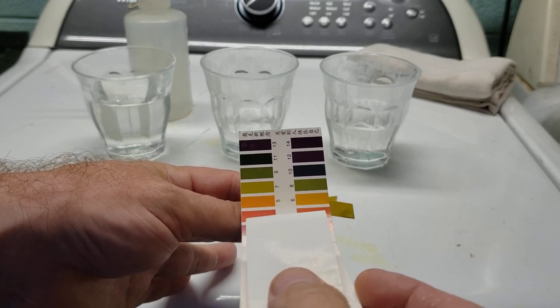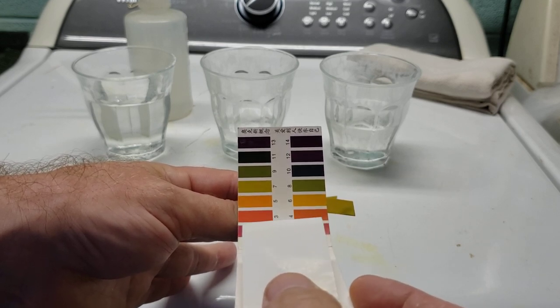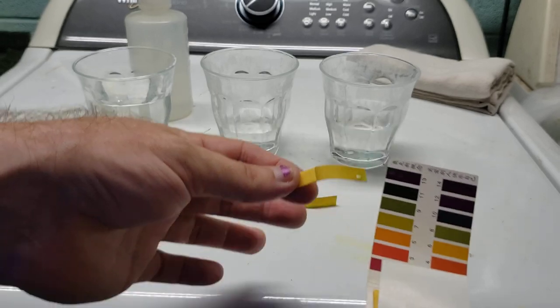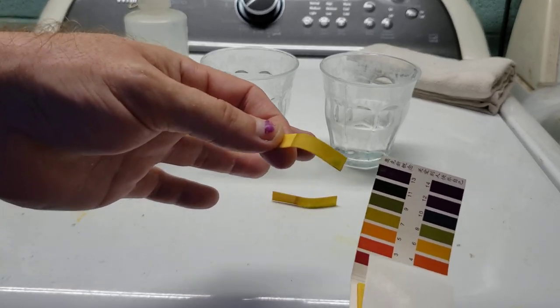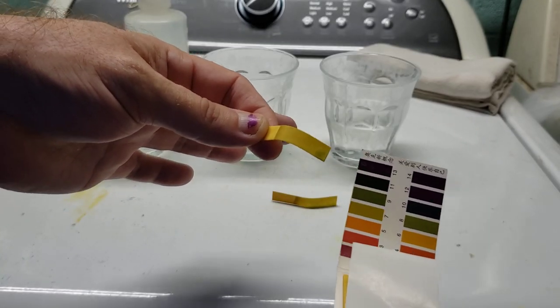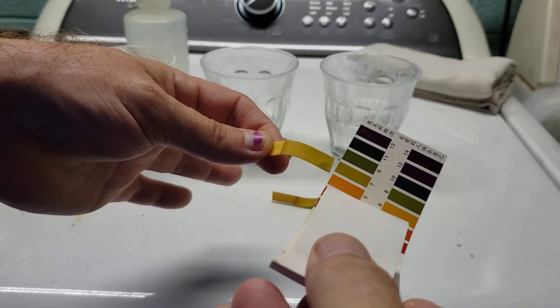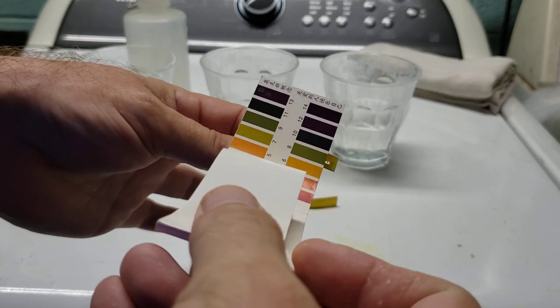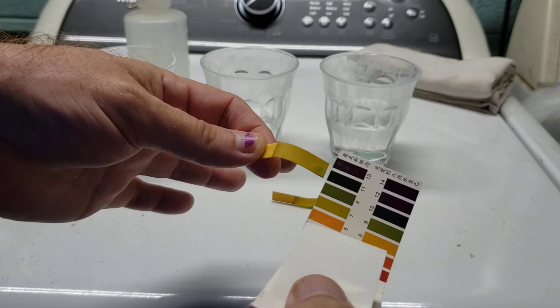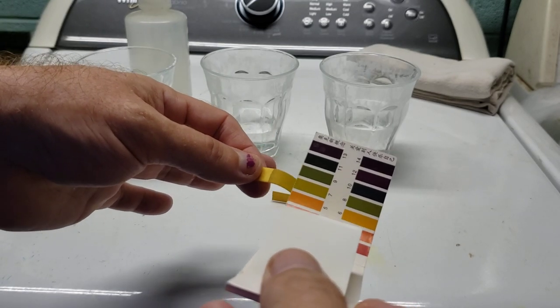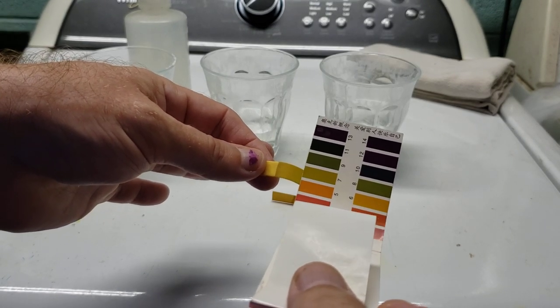I've never taken a chemistry class or science classes where I learned how to read these papers properly. I don't know if I'm supposed to let that water puddle in the corner and then go by the color of the water, because that's always a little darker and does look closer to eight. But the paper, which is what I think I'm supposed to be reading, looks to be about seven.